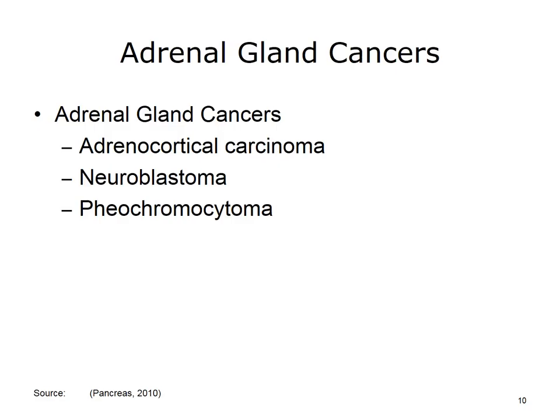A number of diseases can affect the adrenal glands, including several types of cancer. Examples include adrenocortical carcinoma, which is cancer in the outer part of the gland; neuroblastoma, a type of childhood cancer; and pheochromocytoma, which is a tumor of the medulla that causes hypertension, weight loss, and personality changes. Fortunately, adrenal gland cancers are uncommon. Most tumors of the adrenal glands are non-cancerous adenomas and usually do not result in symptoms requiring treatment. Possible treatments include surgery, chemotherapy, and radiation therapy.